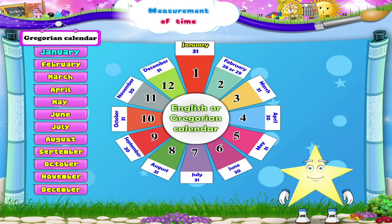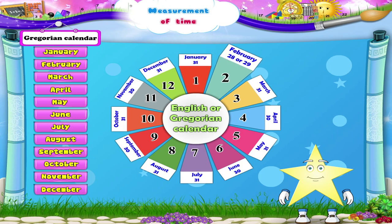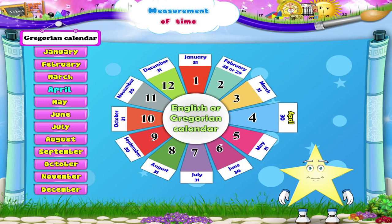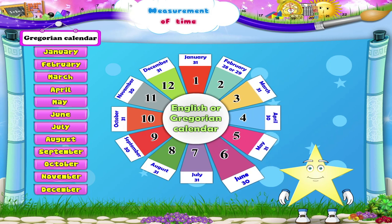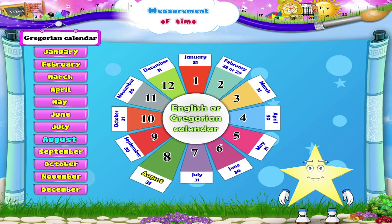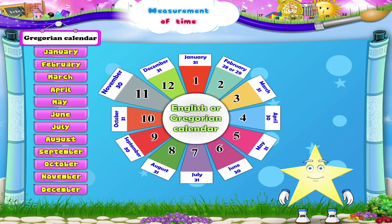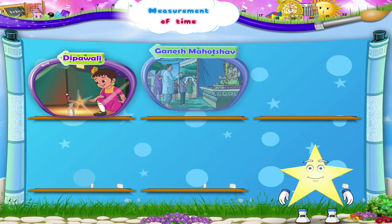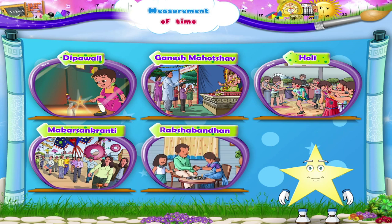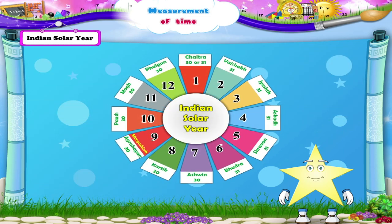January, February, March, April, May, June, July, August, September, October, November, December. Starry, we generally use the names of the Gregorian year months, but when we celebrate Indian festivals, we also consider the months of the Indian solar year. You must have heard their names from your grandparents. Let us learn the names of the months of the Indian solar year.